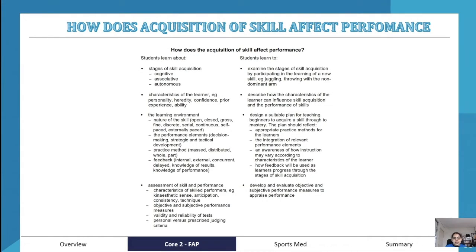There are lots of topics we're going through. We'll have a look at the stages of skill acquisition, so the three different methods: cognitive, associative, and autonomous. We will then look at the characteristics of a learner, for example how their personality contributes, their heredity.